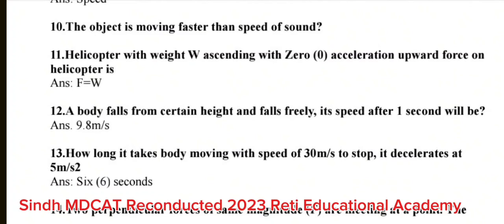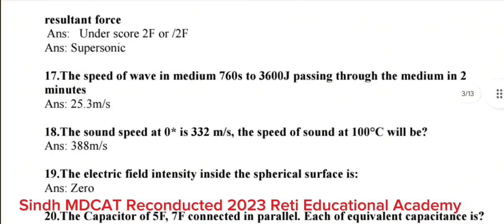Question number 14: Two perpendicular forces of same magnitude F are meeting at a point. The resultant force. Question number 17: The speed of wave in medium 760 to 3600 Joules passing through the medium in 2 minutes. The correct answer is 25.3 meter per second. Question number 18: The sound speed at 0 is at 332 meter per second. The speed of sound at 100 will be? The correct answer is 388 meter per second.